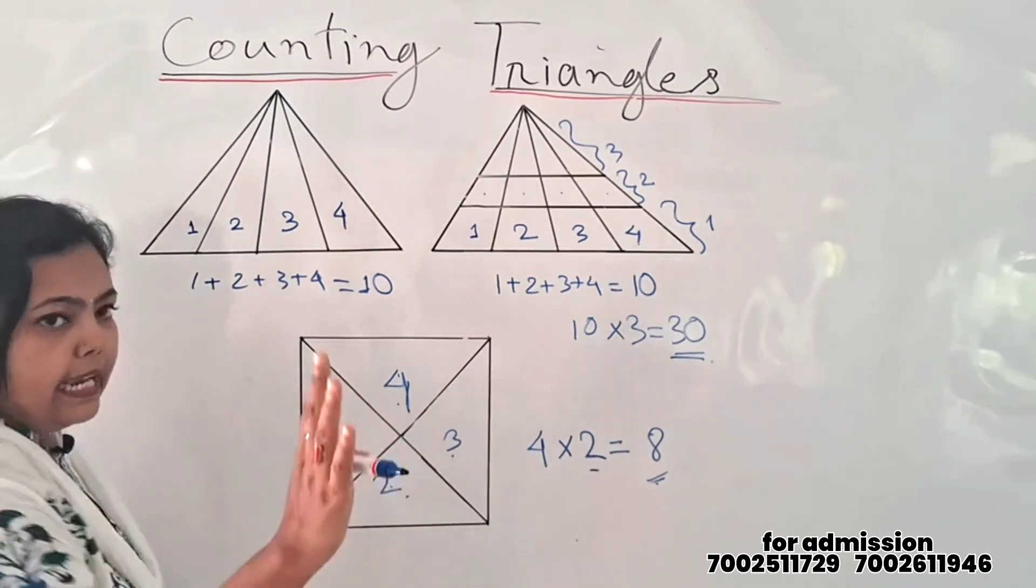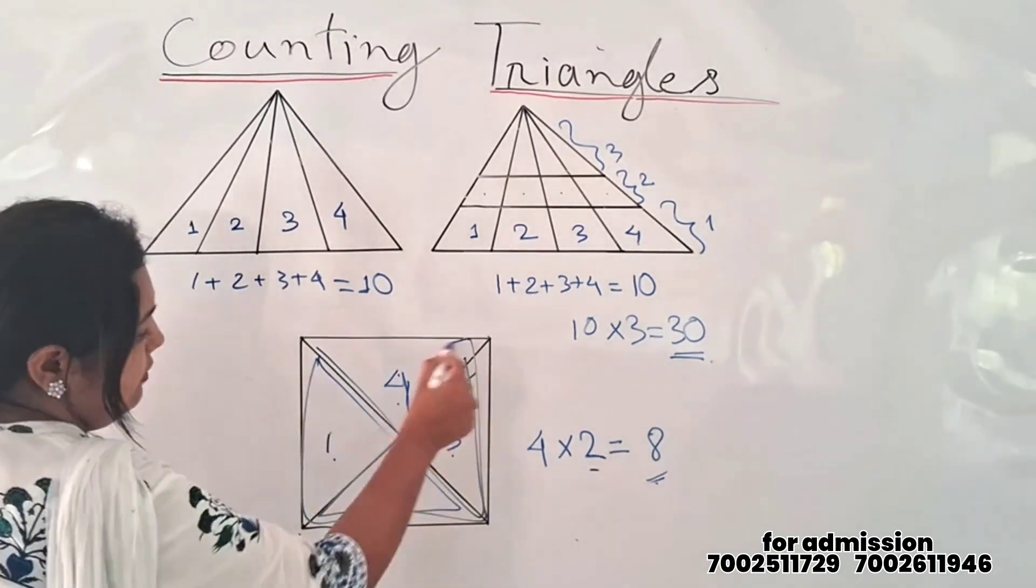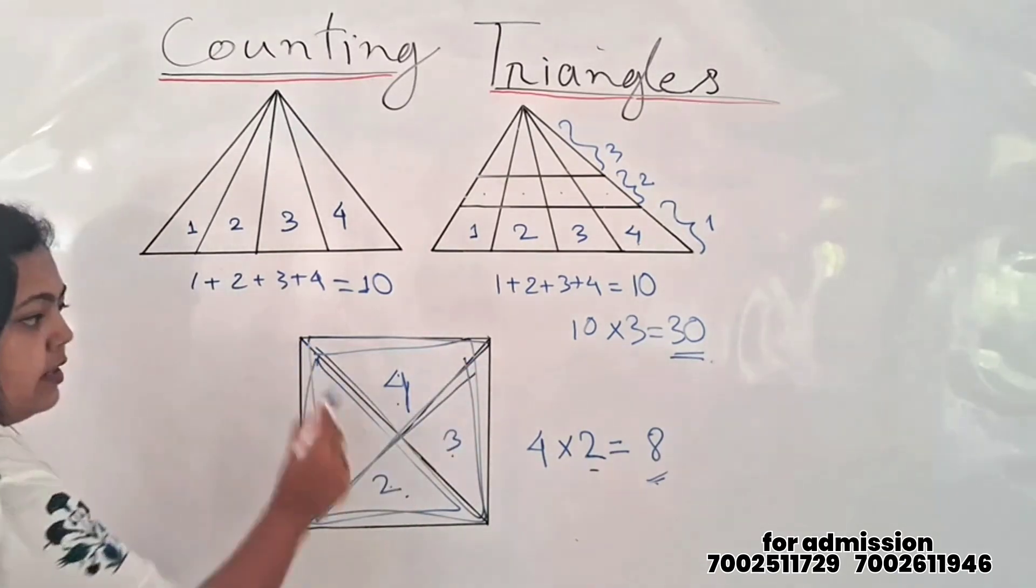If you want to check it out, this is 1, 2, 3, 4. This triangle is 5, this is 6, this is 7, and this is 8 triangles.